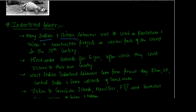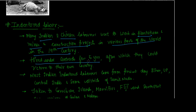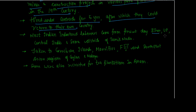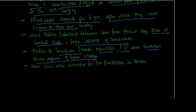Mainly Indian or Chinese indentured laborers were taken. They were made to work in plantations, mines, and construction projects in various parts of the world in the 19th century, when indentured labor became very popular. Hired under contracts for about five years, after which they could officially return to their own country. Most Indian indentured laborers came from present-day Bihar, Uttar Pradesh, Central India, and some districts of Tamil Nadu. They were taken to the Caribbean islands, Mauritius, Fiji, and Southeast Asian regions of Ceylon and Malaya.